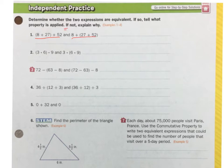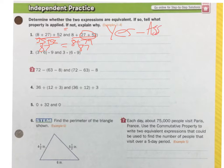8 plus 27, that is 35, plus 52, and when I add those together, I get 87. Now I have 8 plus, but I have to do my parentheses first. So 27 plus 52 is 79. Bring down my 8. 8 plus 79 is 87.